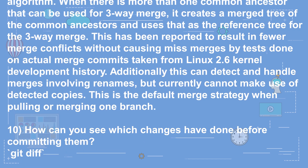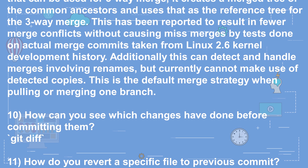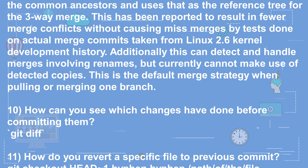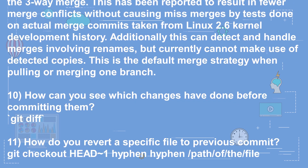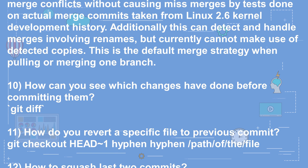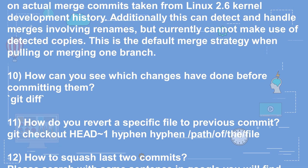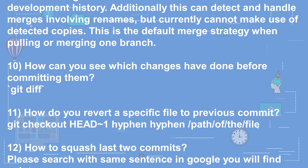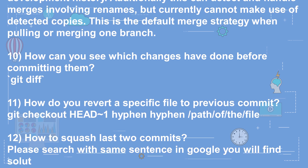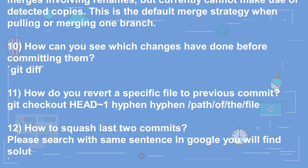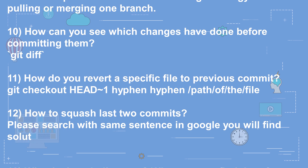Question 10: How can you see which changes have been made before committing them? Answer: git diff. Question 11: How do you revert a specific file to a previous commit? Answer: git checkout HEAD~1 -- /path/to/the/file.